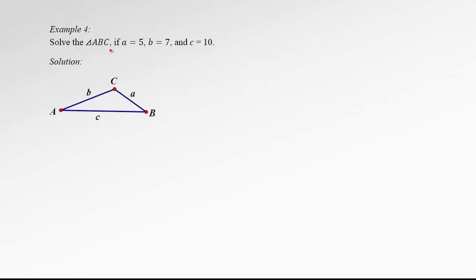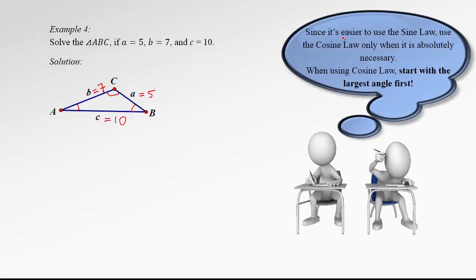Solve the triangle ABC where A is 5, B is 7, and C is 10. We need to find angles A, B, and C. One remark: since it's easier to use the sine law, we should use the cosine law only when it's absolutely necessary — when the sine law is not possible. Also, when using the cosine law, start with the largest angle first.